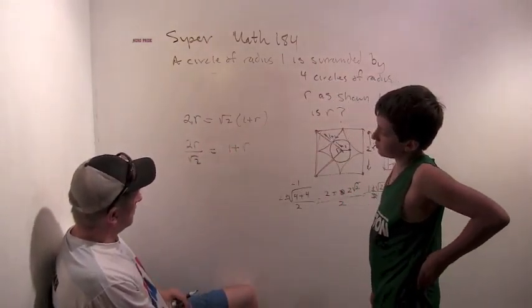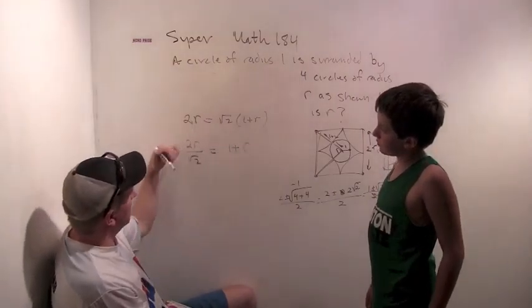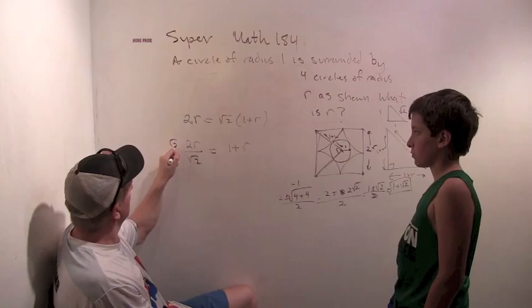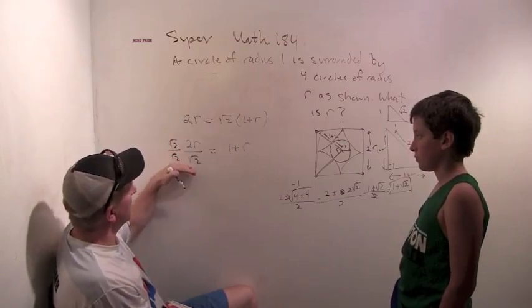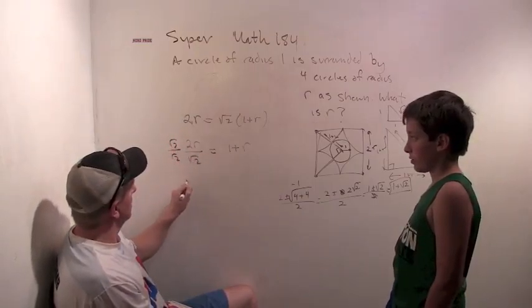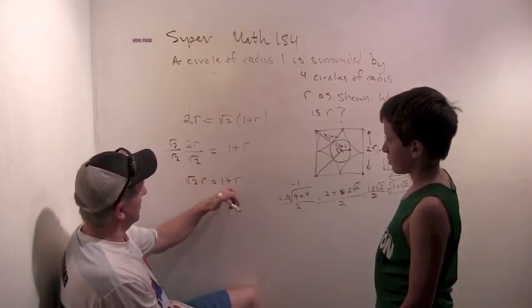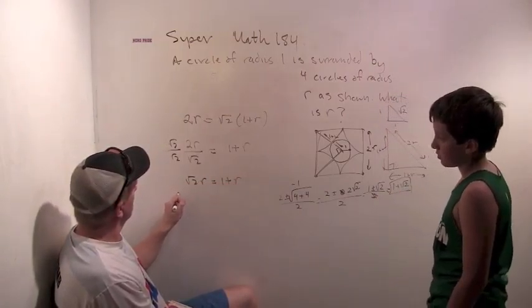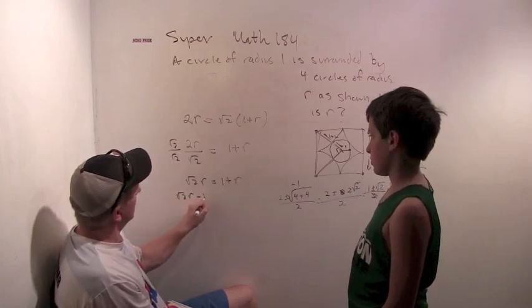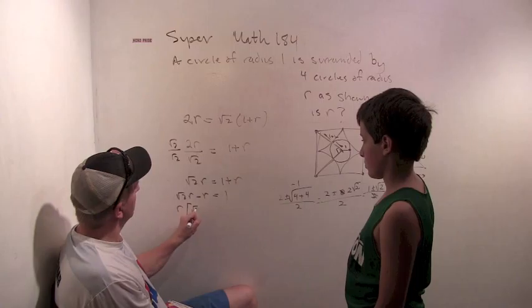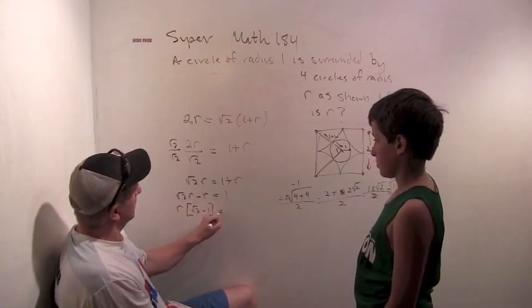Same thing, because you need to multiply by root 2. Yeah, okay. So since they're the same, let me just work with this one. So I'll rationalize this, so I get a 2 on the bottom, 2 on the top and root 2. Yeah, so root 2r equals 1 plus r. So I'll bring the r to this side, root 2r minus r equals 1, r times root 2 minus 1 equals 1, r equals 1 over root 2 minus 1.